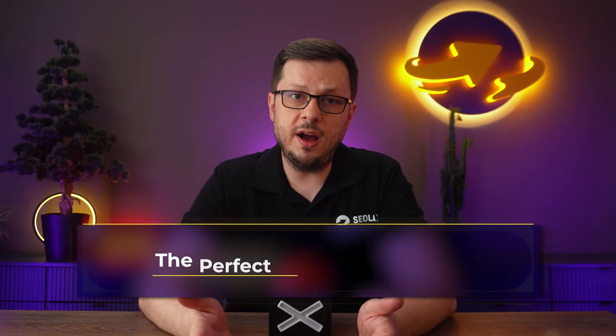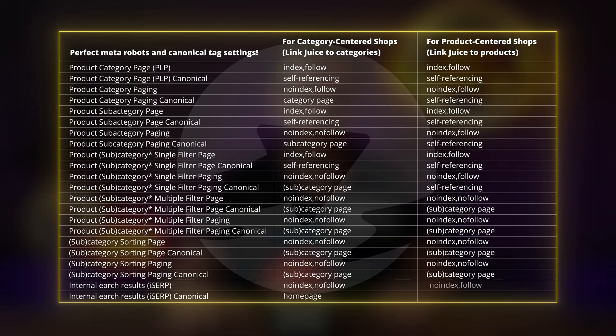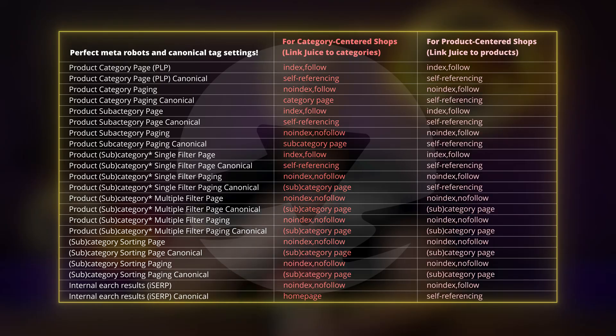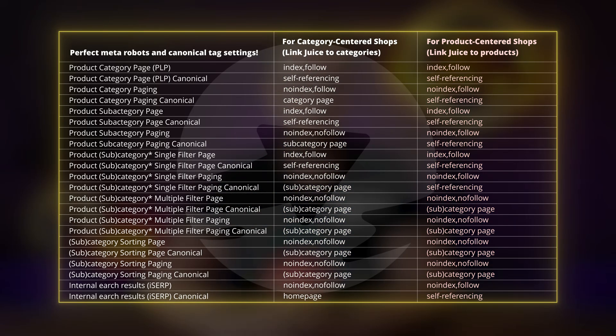I must admit, all this together is complicated and can get confusing. But the solution can be easy and I will show you how it can be done with just one click. So what are the perfect settings for those two types of online stores? Here's an overview of all the meta robots and canonical settings you should have depending on the shop type you manage. The left row is for category-centered shops and the right one for product-centered shops. You can try to set it up in your CMS — it is doable with a lot of custom tweaks. But if you're using WooCommerce, I have great news for you. We have developed a plugin just for that, and it is so simple you won't believe it. You just need to press one button and you're done.